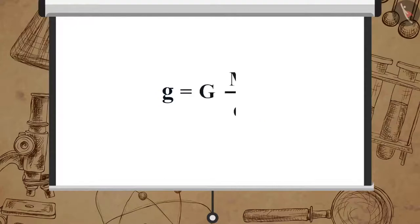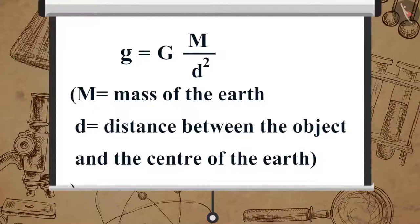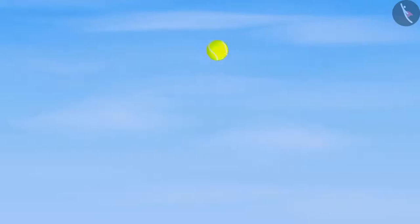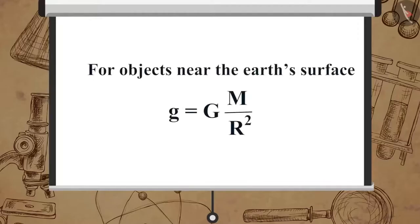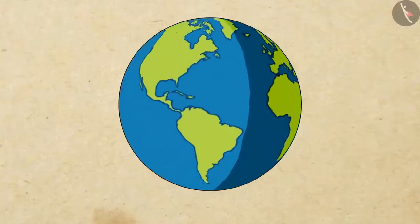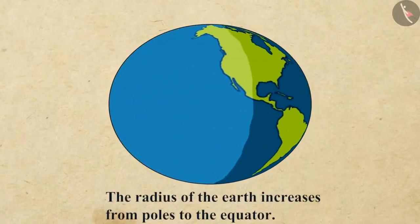So g equals G·M divided by d square, where M is the mass of the Earth and d is the distance between the object and the center of the Earth. If an object is near the surface of the Earth, then d equals R, the radius of the Earth. Therefore, for objects near the Earth's surface, g equals G multiplied by M divided by R square.